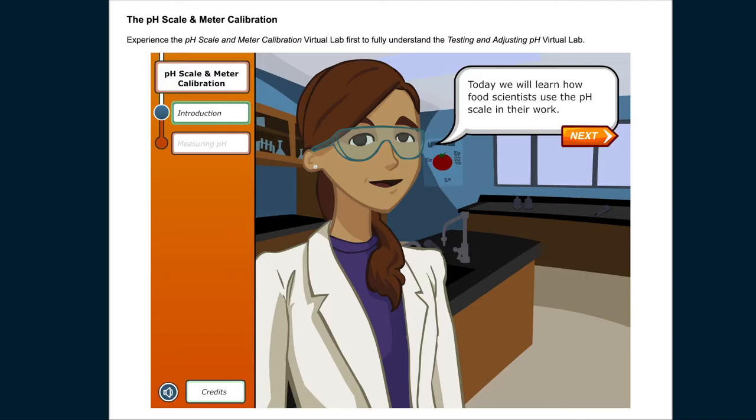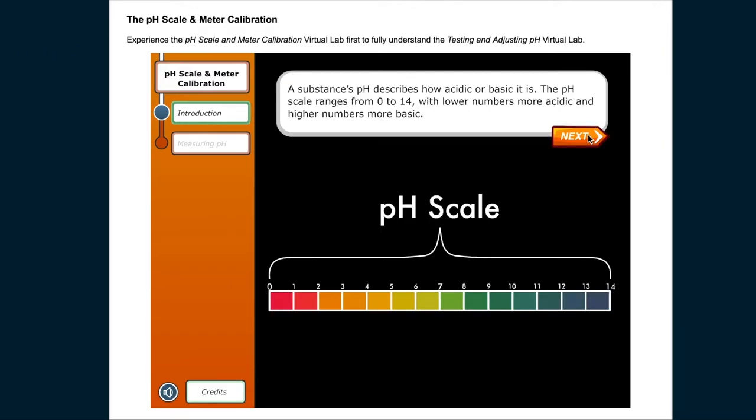Today, we will learn how food scientists use the pH scale in their work. A substance's pH describes how acidic or basic it is. The pH scale ranges from 0 to 14, with lower numbers more acidic and higher numbers more basic.